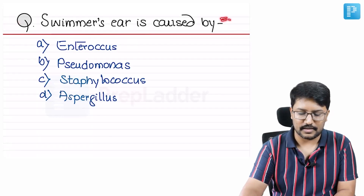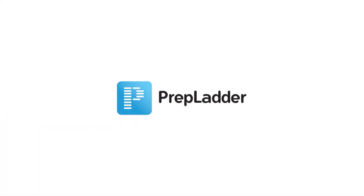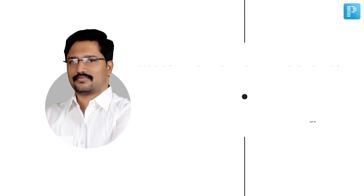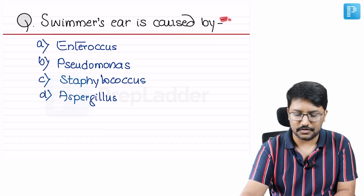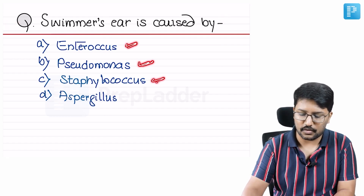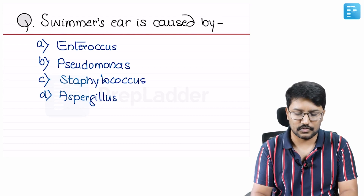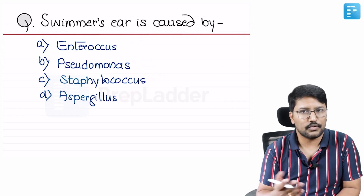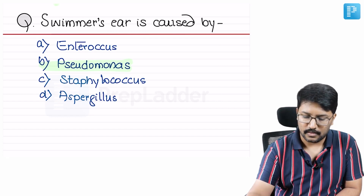Swimmer's ear is caused by which organism? Options are Enterococcus, Pseudomonas, Staphylococci, and Aspergillus. The answer is clear — Pseudomonas is the causative organism for swimmer's ear.